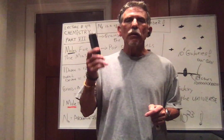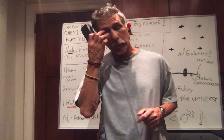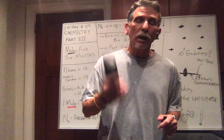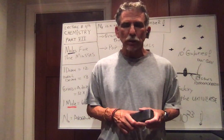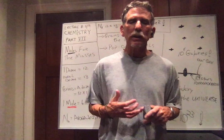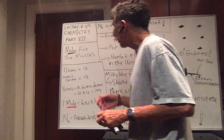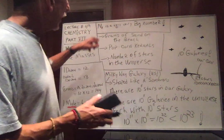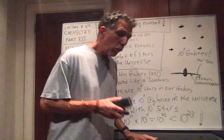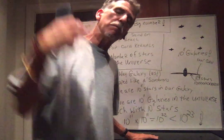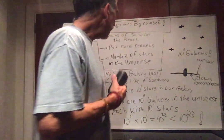So I have one mole of bananas — how many bananas do I have? That's a lot of bananas: 6.02 times 10 to the 23rd, or for us just 6 times 10 to the 23rd. Avogadro's number is a very, very big number. One mole of anything is a very, very, very big number. So keep that in mind.